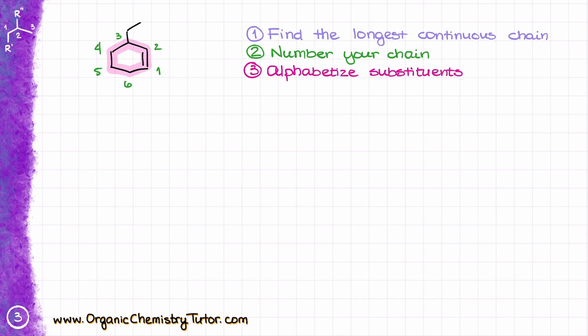Next I alphabetize my substituents. In this case I only have one substituent — the ethyl group — so there isn't much to alphabetize. That means my name is 3-ethyl-cyclohexene. Notice I am not putting the number one before the -ene, because when there is only one double bond in a cyclic compound, the numbering always starts from that double bond, making it redundant.